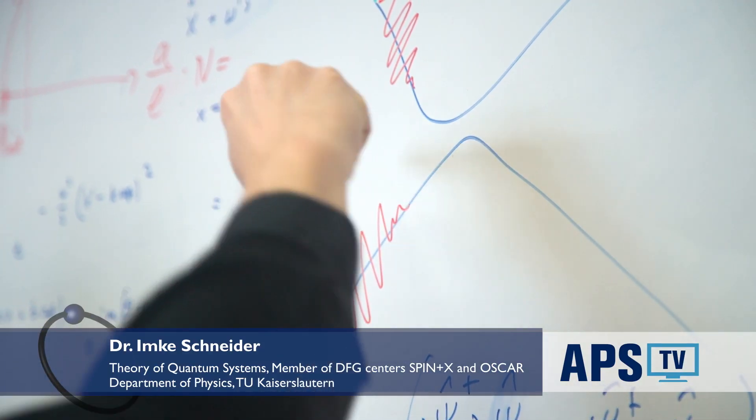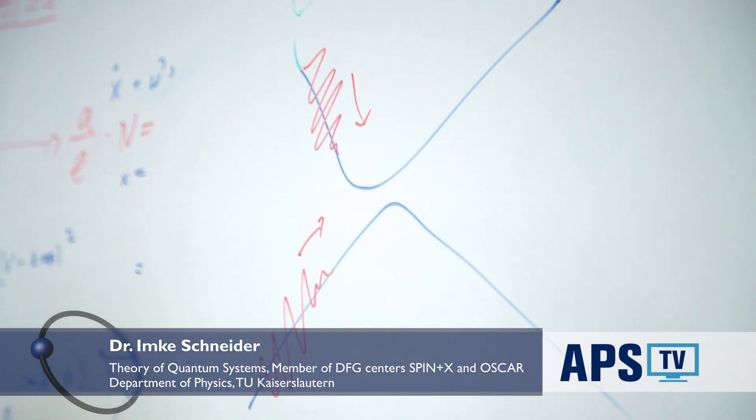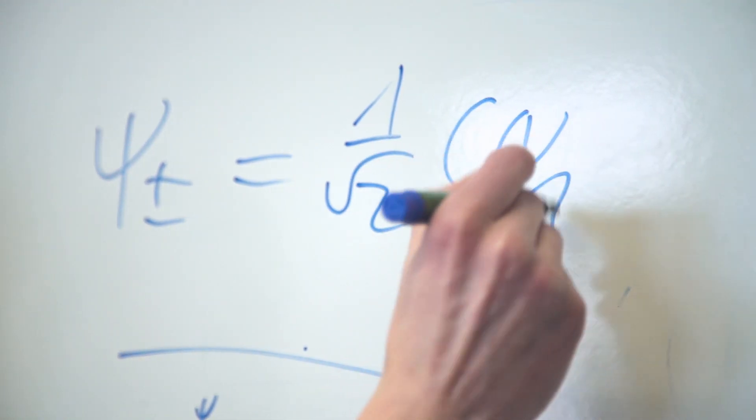I'm interested in quantum systems of many particles which strongly interact with each other. Because of these strong interactions, they lead to strong correlations, we find unusual physics. This is a challenge on its own to investigate such systems, and on top of that I'm interested if these systems are not in thermal equilibrium.